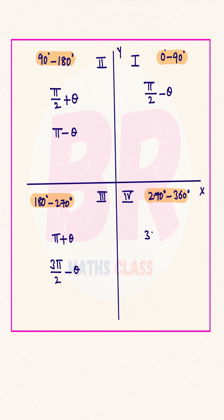3 pi by 2 plus theta lies in the fourth quadrant. 2 pi minus theta lies in the fourth quadrant. 2 pi plus theta lies in the first quadrant.